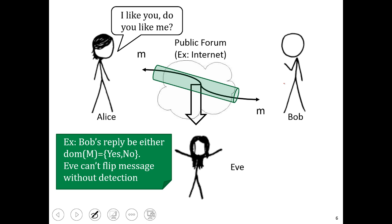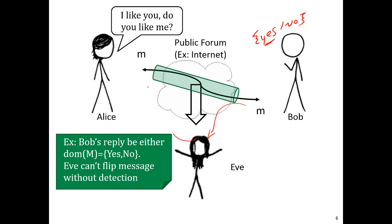So for example, we don't want it to be the case that when Bob sends back his reply — remember, it's going to be either yes or no — Eve can intercept this and change it to be no. That would be terrible.